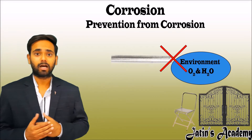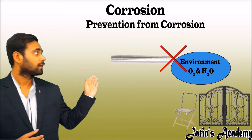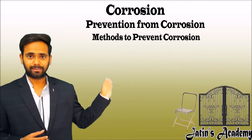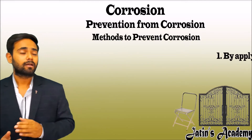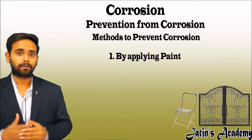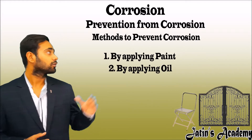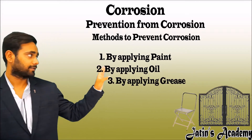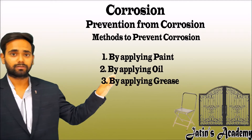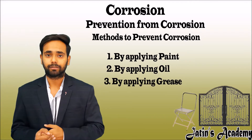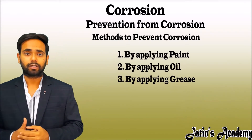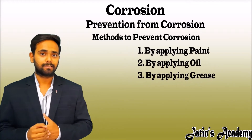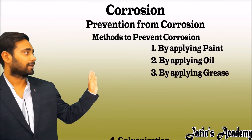To cut the link between the outer surface of the iron and the environment, we can use different methods. First is by applying paint on the surface, or by applying oil on the surface, or by applying grease on the surface, according to the different application. The most important process actually used is galvanization.